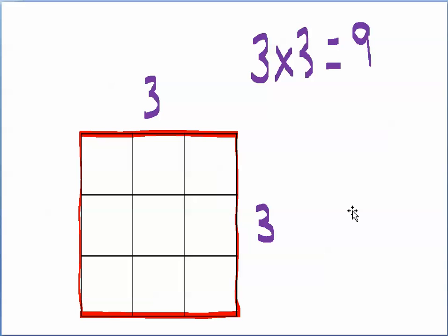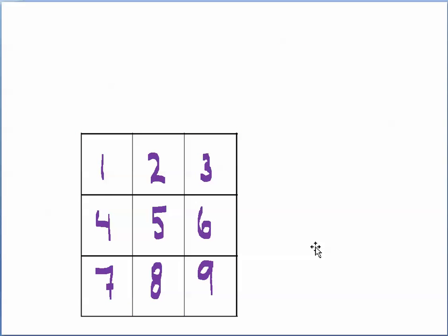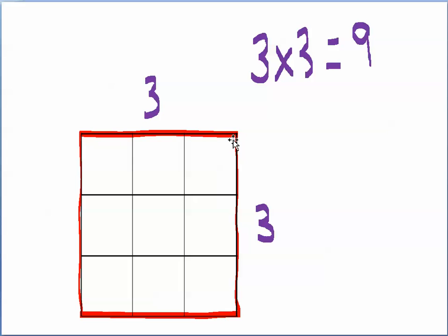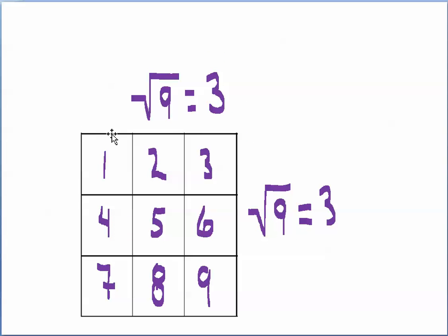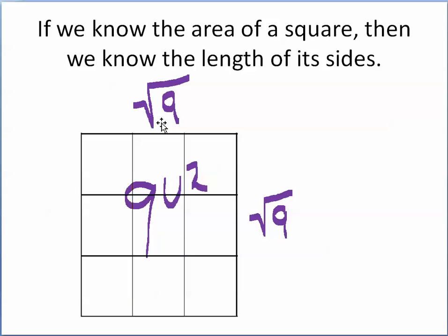Here we have a larger red square that's 3 by 3. 3 times 3 is 9, so we have 9 squares here. This larger red square has an area of 9 units squared. And 9 units squared is the same thing as 3 times 3, or the square root of 9. So I can rewrite the 3 as being the square root of 9. Our area is 3 times 3, and each 3 can be rewritten as the square root of 9. If we know the area of a square, then we know the length of its sides.